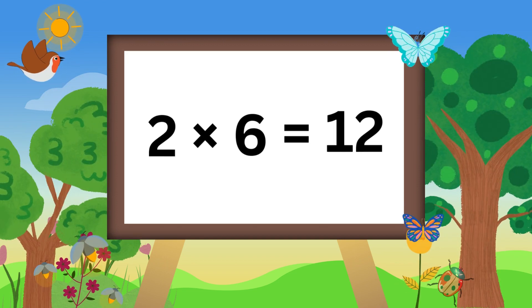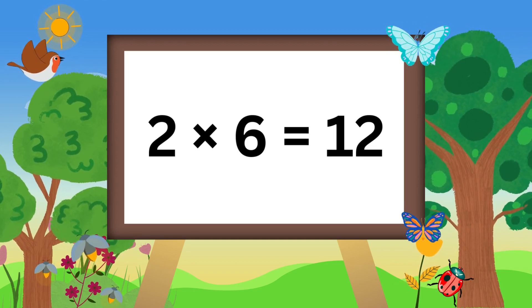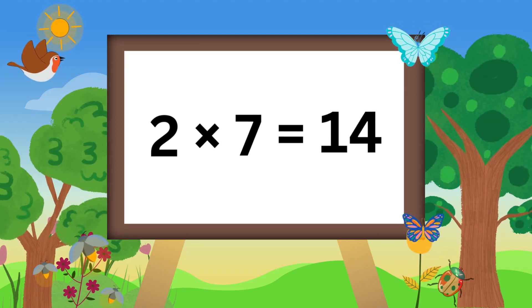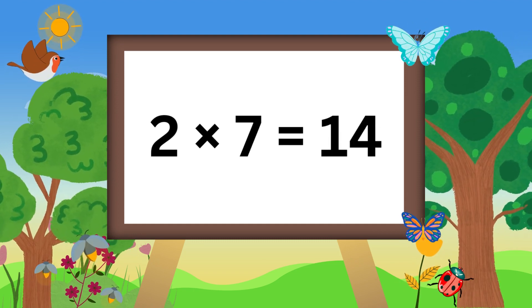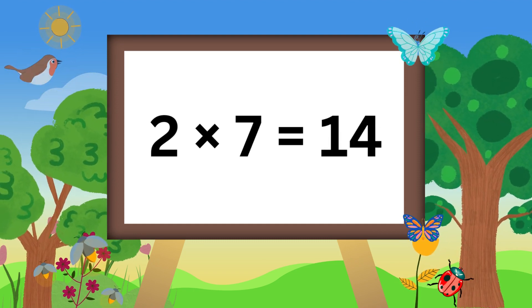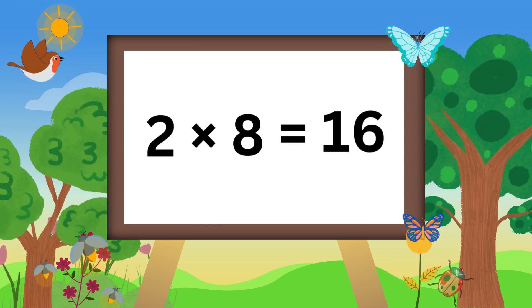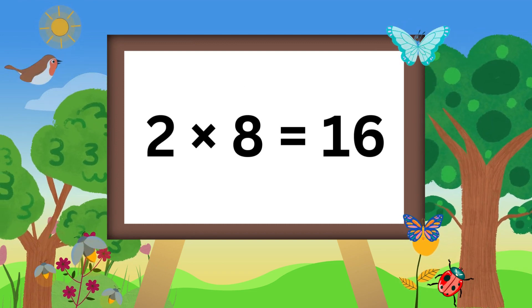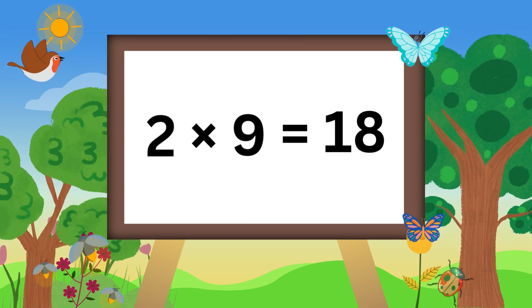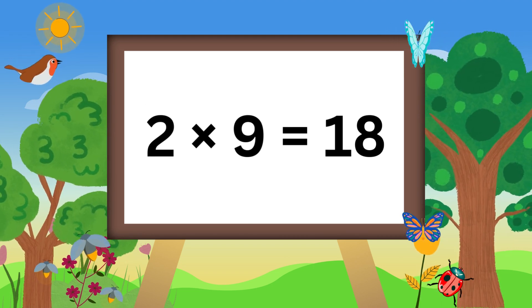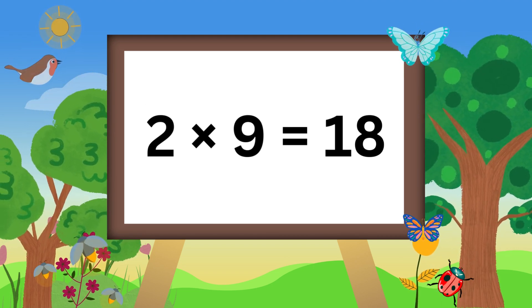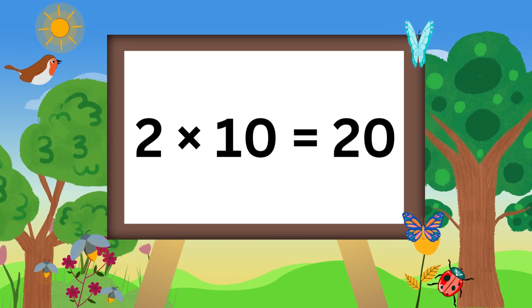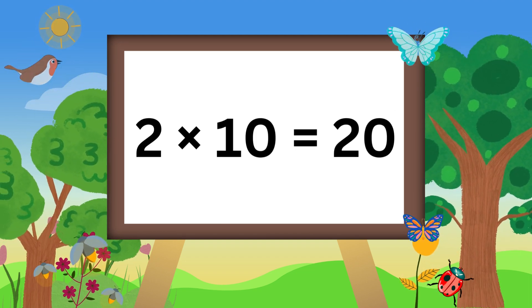Two sixes are twelve. Two sevens are fourteen. Two eights are sixteen. Two nines are eighteen. Two tens are twenty.